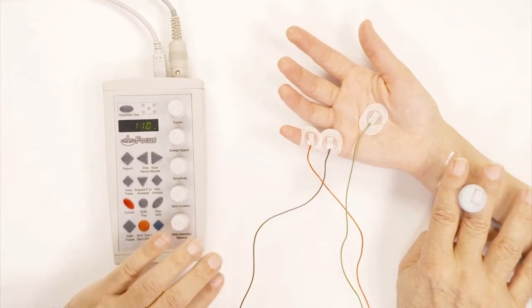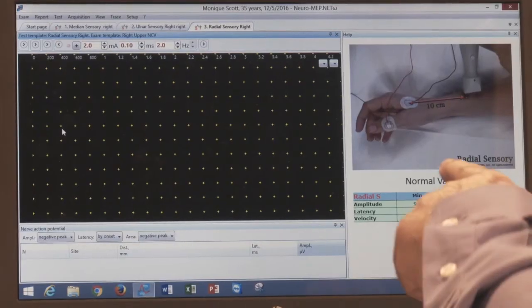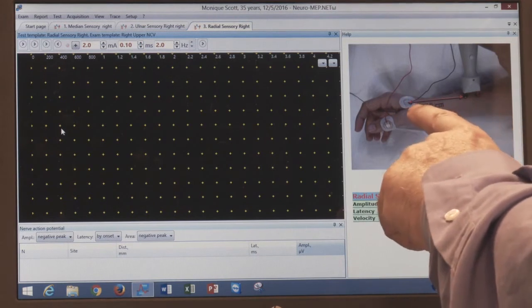Now I'm going to move and do the radial sensory by pressing on the next button right here. This is a radial sensory, and as you see here I stimulated the radial nerve in the forearm, not at the wrist anymore.